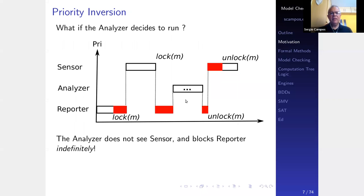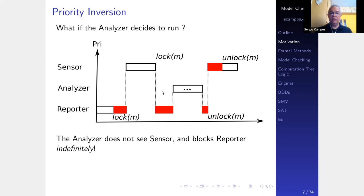However, the analyzer may decide to run at some point. In the time that the reporter is blocking the sensor, the analyzer decides to run — it can run at any time, and it has higher priority than the reporter, so it blocks the reporter. This is unbounded priority inversion. In that case, the sensor will be blocked for a potentially unacceptable amount of time. This is a serious problem that is really not simple to identify.